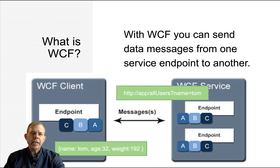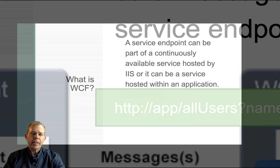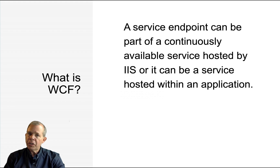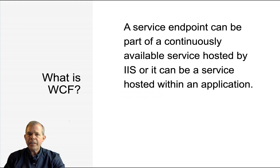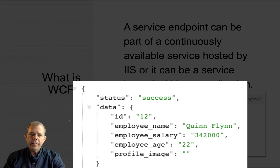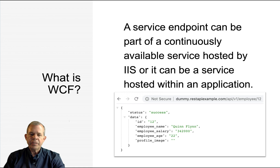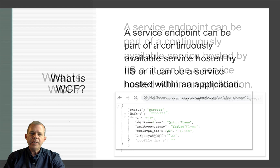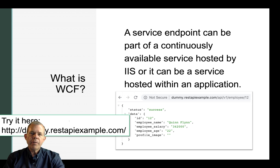WCF is all about communication between services in different applications. An endpoint can be continuously available or just inside an application — application to application, or internally. The data format you probably associate most with WCF is JSON. This is JSON formatted data, and the format is very easy to read. Here's a URL where we can test out a REST API example — let's go see what it looks like.